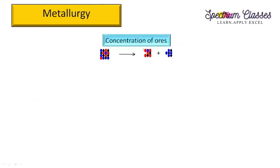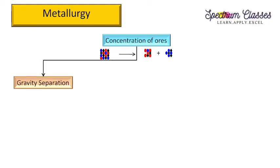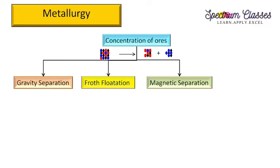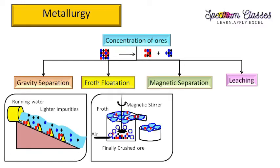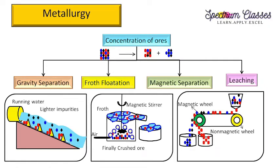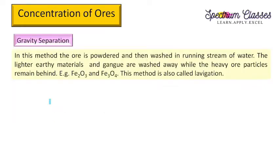Here we can see the ore and the removal of gang particles from the ore to increase the concentration of the metal is called concentration of ore. There are four different methods: gravity separation, froth flotation method, magnetic separation method, and leaching. You can see pictures for these different concentration or separation methods including gravity separation, froth flotation method, magnetic separation method, and leaching with appropriate solvents.